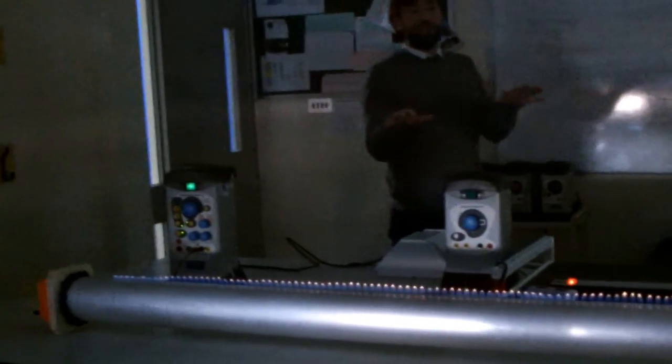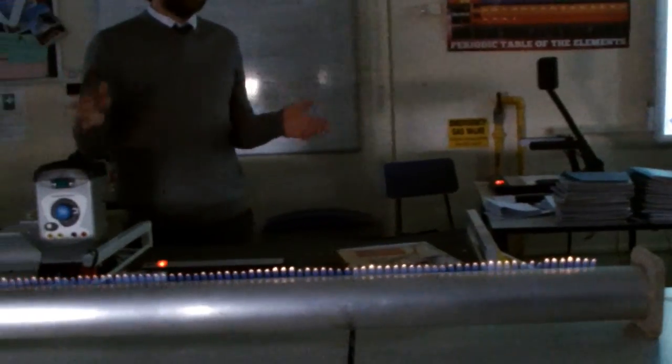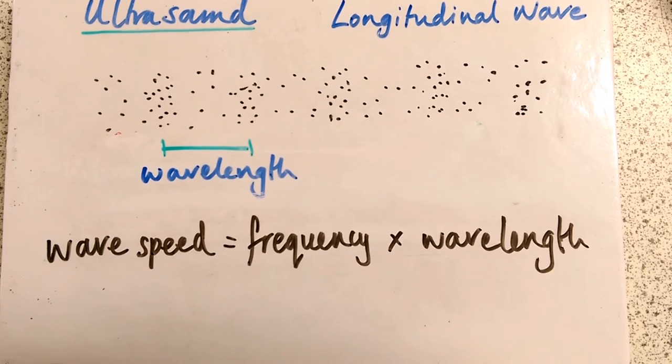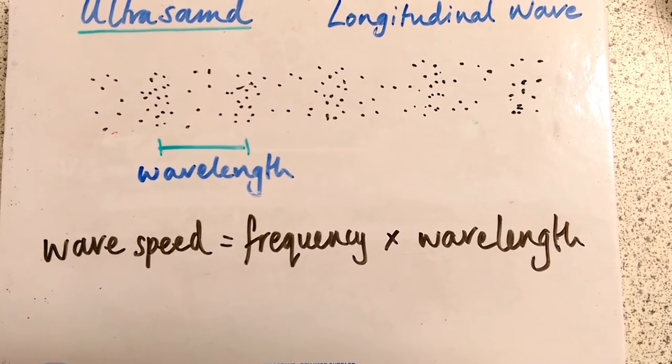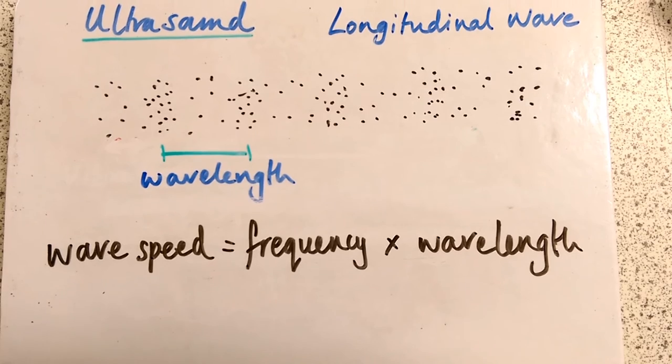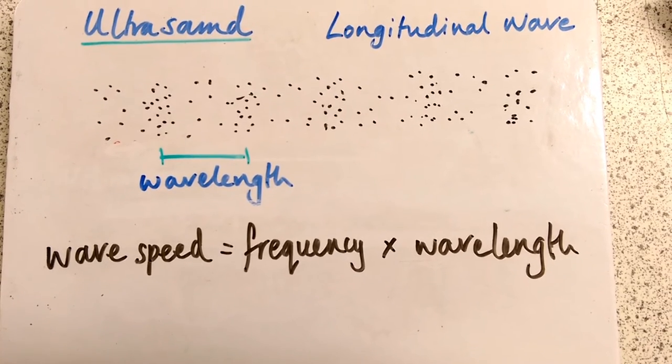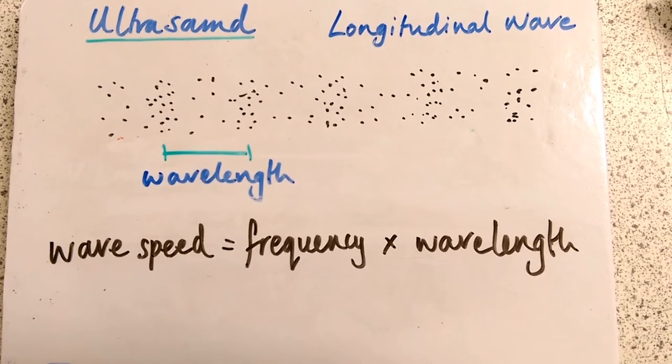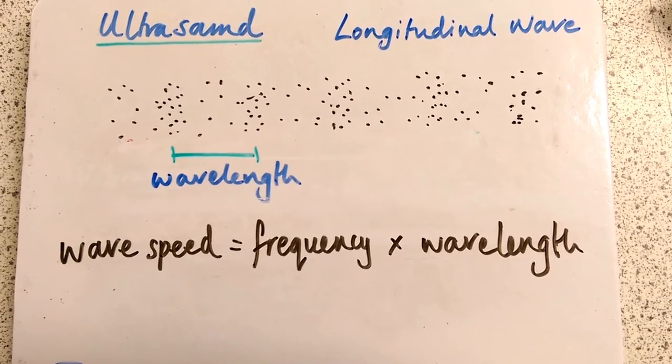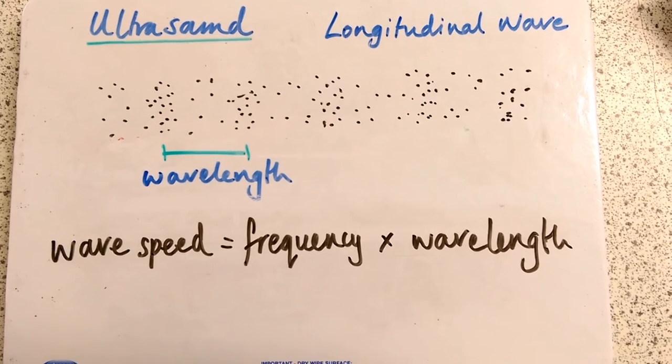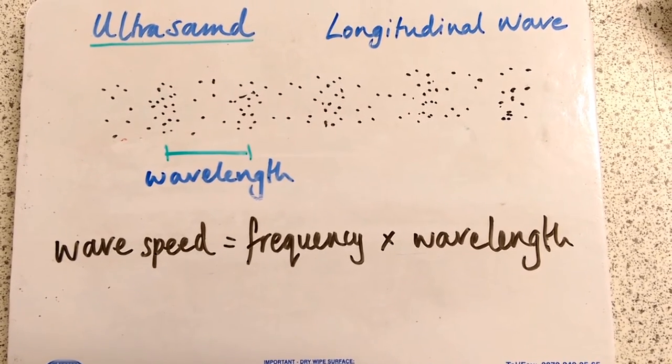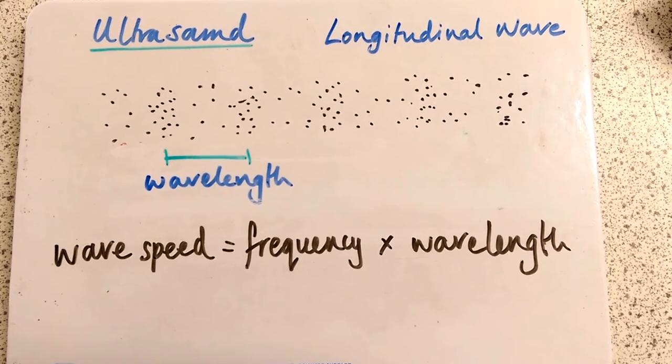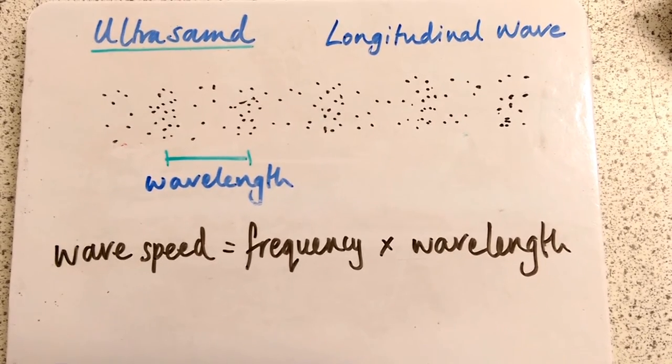Now what the Rubens tube is a really nice demonstration of is how frequency and wavelength are related. To understand how frequency and wavelength are related, they're related by the wave speed equation. The speed of the wave is the same in any given medium. The speed of sound in air is different to the speed of sound in water or through steel. But that is always the same in that medium. So the wave speed in that medium equals the frequency times the wavelength. Basically if you increase the frequency you decrease the wavelength for the wave speed to be constant.